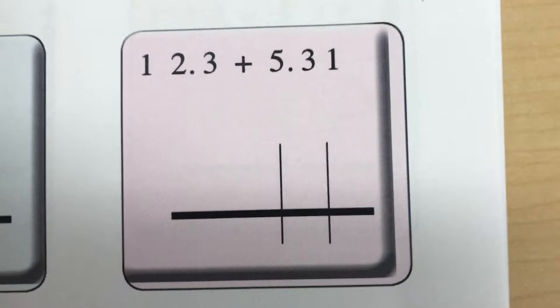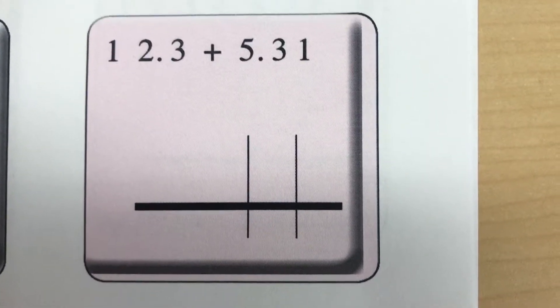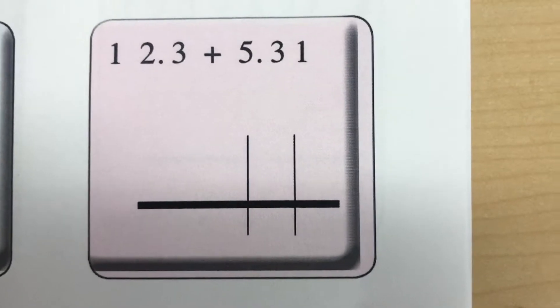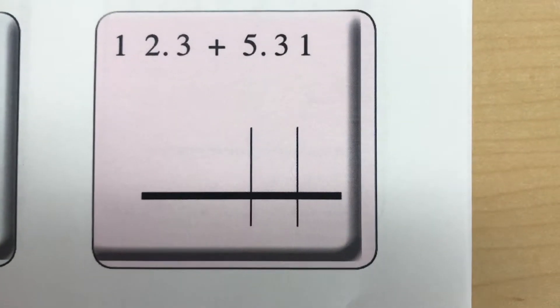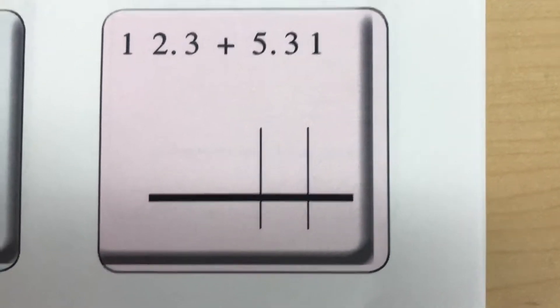When asked to add 12.3 plus 5.31, many students will make errors because they'll set the problem up as a right-justified problem, aligning the digits in the rightmost spot rather than aligning digits based on place value.